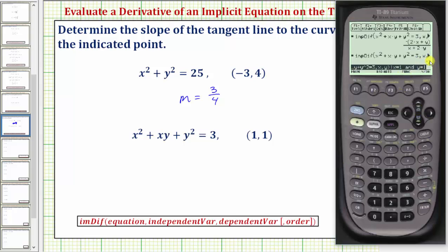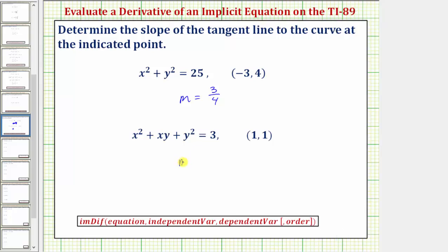Dy/dx is equal to negative one at the point one comma one, which means the slope of the tangent line at the point one comma one is negative one. So we have m equals negative one.